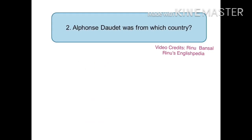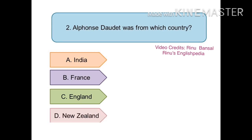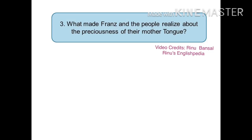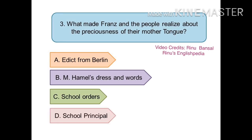The next question is: Alphonse Daudet was from which country? The options are India, France, England, or New Zealand. The right answer is France. The next question is: what made France and the people realize the preciousness of their mother tongue? The options are: (a) an edict from Berlin, (b) Monsieur Hamel's dress and words, (c) school orders, or (d) school principal.